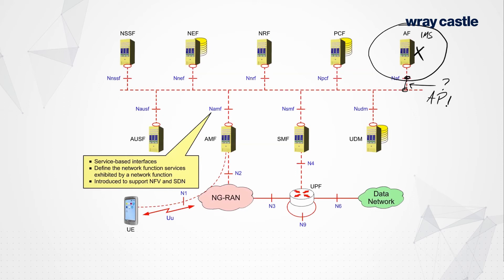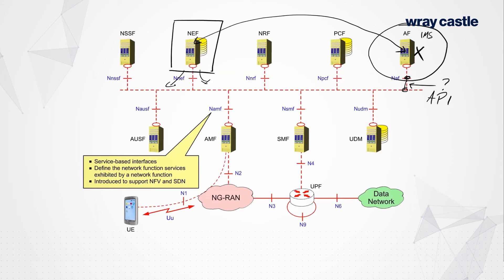This is essentially an application-based API. To support external Application Functions, we have the NEF — the Network Exposure Function — which communicates with the Application Function. The AF can ask the NEF: am I allowed into the network, and if so, what am I allowed to do and which parts of the network can I speak to? The NEF communicates internally with other network functions to verify the AF's identity and permissions, and then delivers a response authorizing the AF and defining which functions it may use.